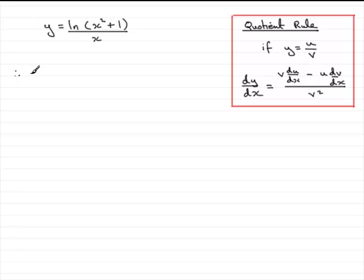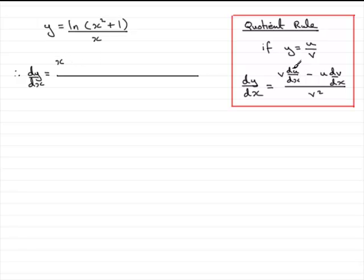So we therefore have dy/dx equals — whenever I'm doing things like the quotient rule I always put the division line first. If we start by taking the bottom of the fraction which is x, we need to multiply it by the differential of the top of the fraction. Now to differentiate the natural log of x would be 1 over x, but because this is a composite function x squared plus 1, we have to use the chain rule.